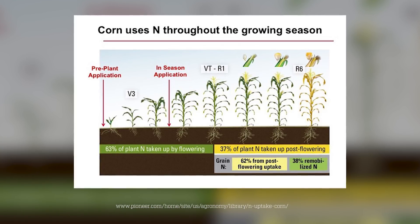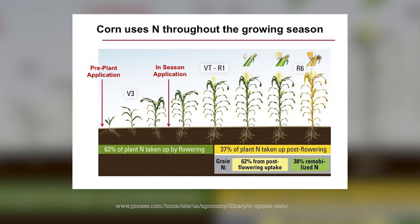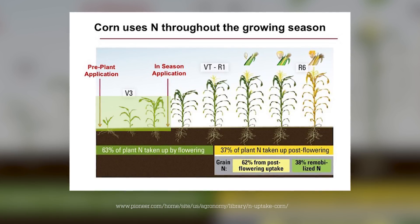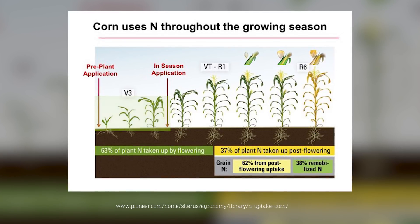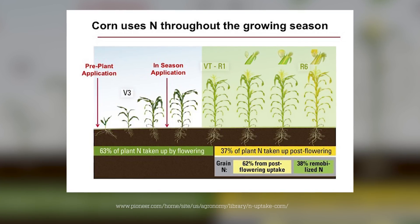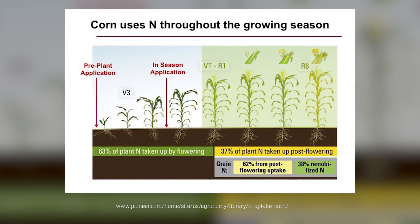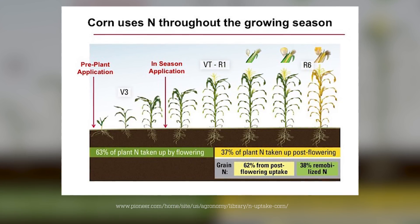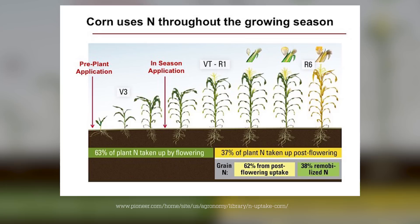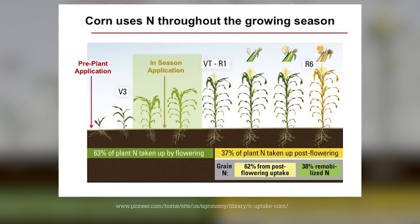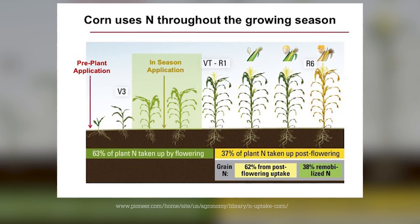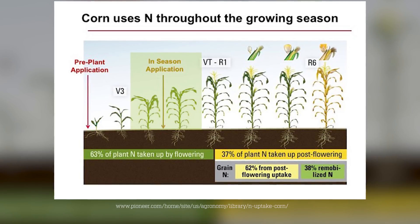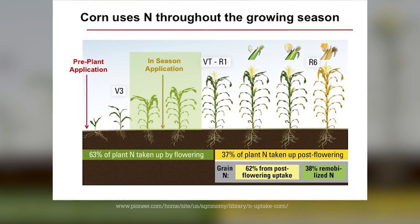Corn uses nitrogen throughout the whole growing season. We cannot say that in early vegetative stage, corn will use the most nitrogen. 37% of the nitrogen is actually used post-flowering. That being said, applying a split application — one in the fall, and applying another application around V5, V6 — will give you that additional nitrogen that provides enough nutrient for plant growth.